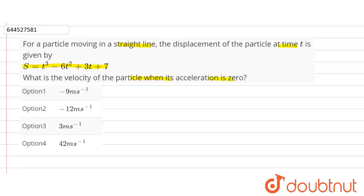So here S is equal to t cube minus 6t square plus 3t plus 7. So velocity V is equal to dS upon dt.